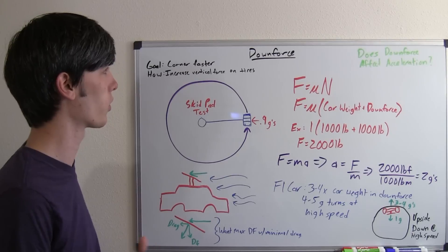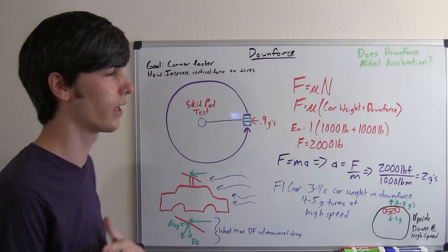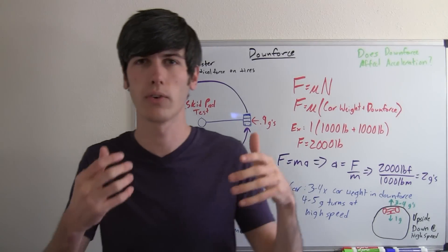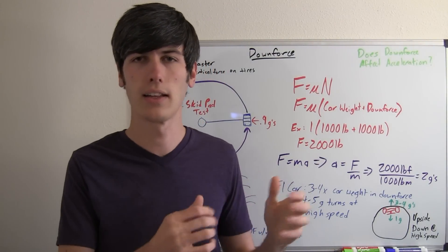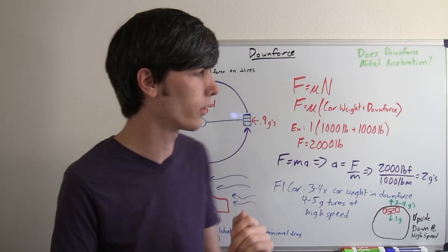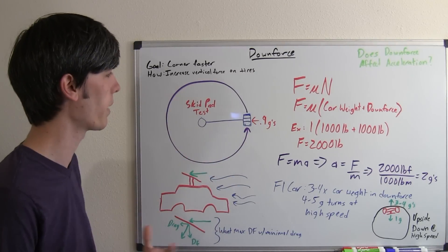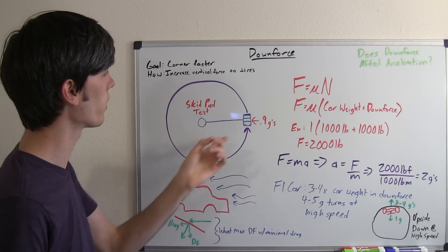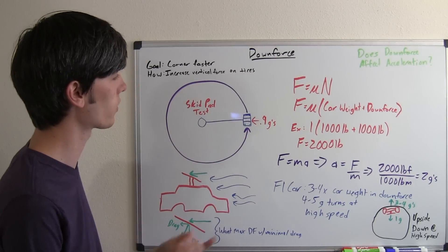But basically what is downforce? Well, downforce is a force pressing down on the car, and the goal of it is to allow you to corner faster. If you have an increased vertical force on your tires, those tires will have an increased frictional limit in which they can hold a car going around a corner. You may hear in car reviews something called a skid pad test on how many G's a car can hold. The frictional limit basically dictates how many G's this car can hold.